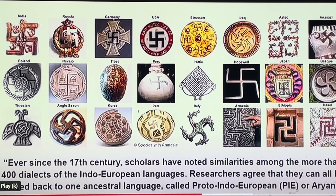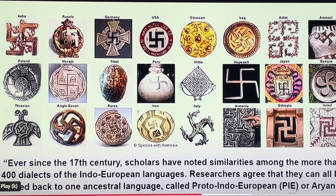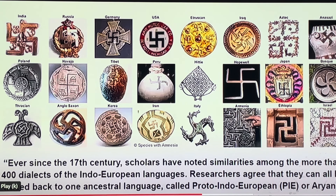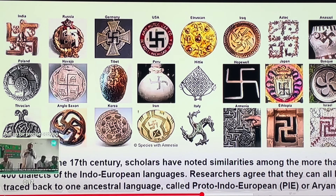We're entering part two on this. Above right here in this picture are symbols from around the world showing the swastika in many different peoples that at one time must have had contact with, or got it from, this one certain people it is associated with.